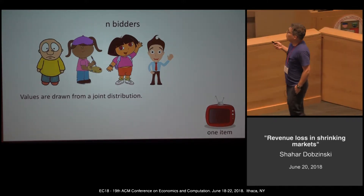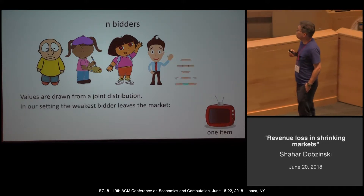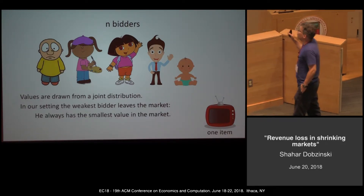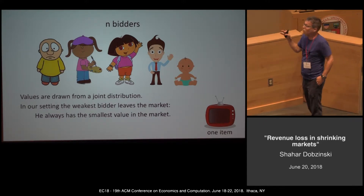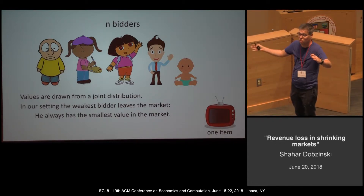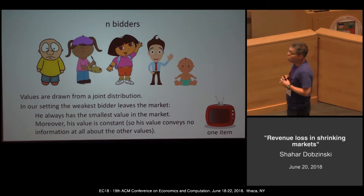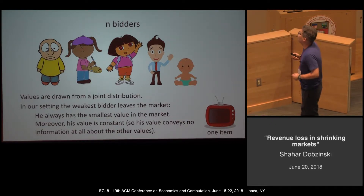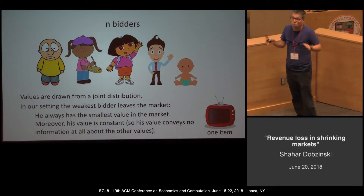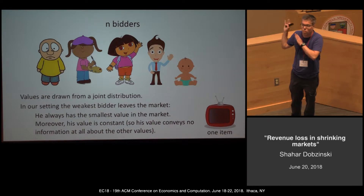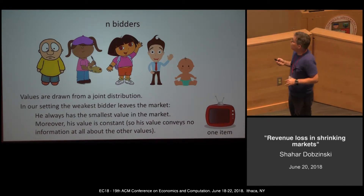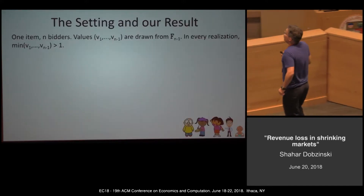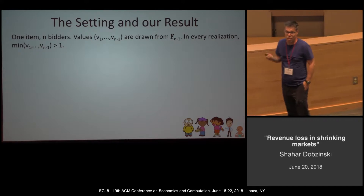What we want to consider is a situation where values are drawn from some joint distribution, but we ensure the weakest bidder leaves. First, this bidder has the smallest value in the market — for every realization, all other bidders' values are strictly larger. Second, we ensure no information is lost when he leaves by making his value constant in every realization of the distribution.